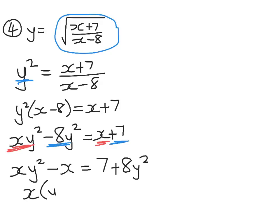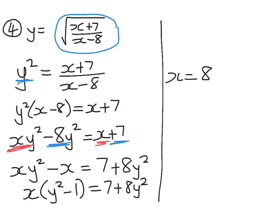Factorizing that out, I get x times y squared minus 1 equals 7 plus 8 y squared. And so my final answer is going to be x equals 8 y squared plus 7 over y squared minus 1. So there we go.